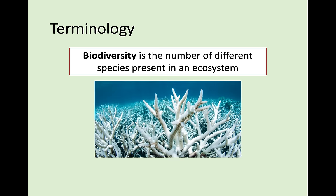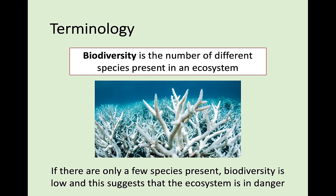However, if we look at this example here, we can see there are very few species present. So if there are only a few species present, biodiversity in this case is low, and it suggests that the ecosystem — with a low number of different species — is actually in danger.